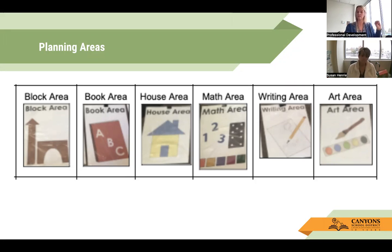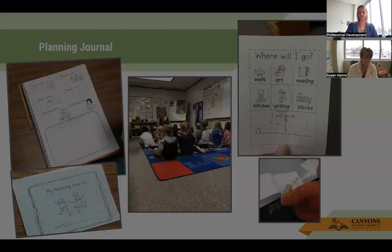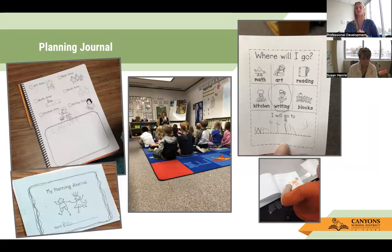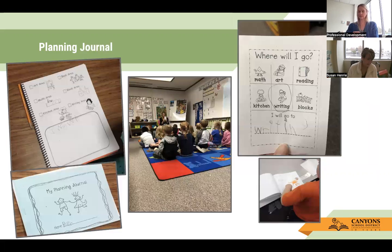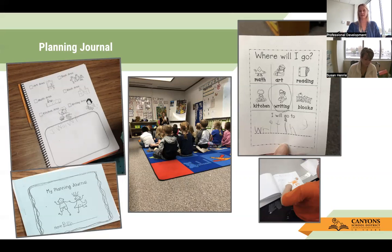Please be mindful that these areas are all up and running at the same time. There can be a gradual introduction, but the idea is that all areas are available to allow students choice, and you can switch out what happens to be in those areas. Here are examples of planning journals — it's allowing students to have that language about what area they're going to. You can see examples where students move from drawing to writing, which is a great assessment showing growth from beginning to end of year.